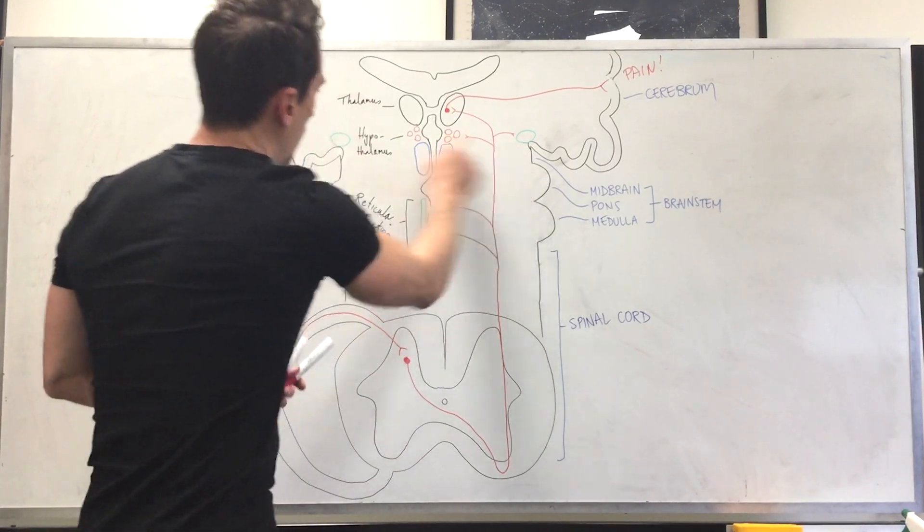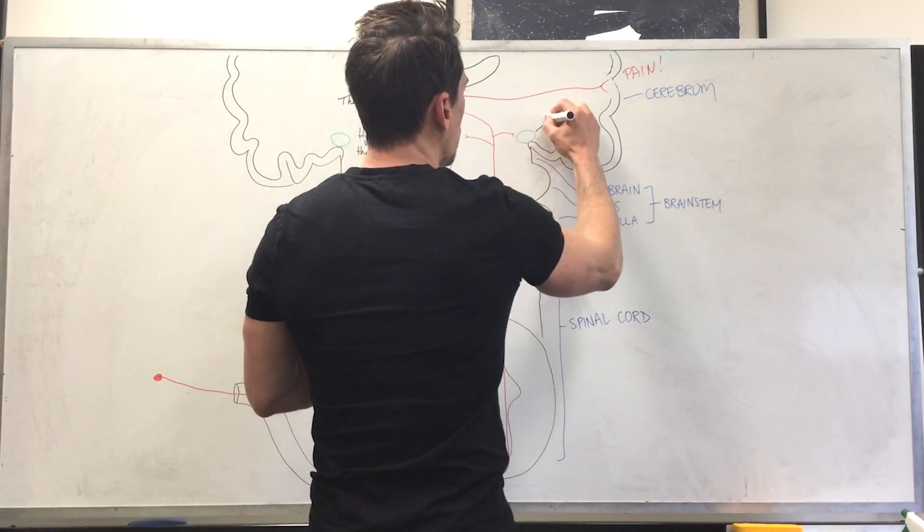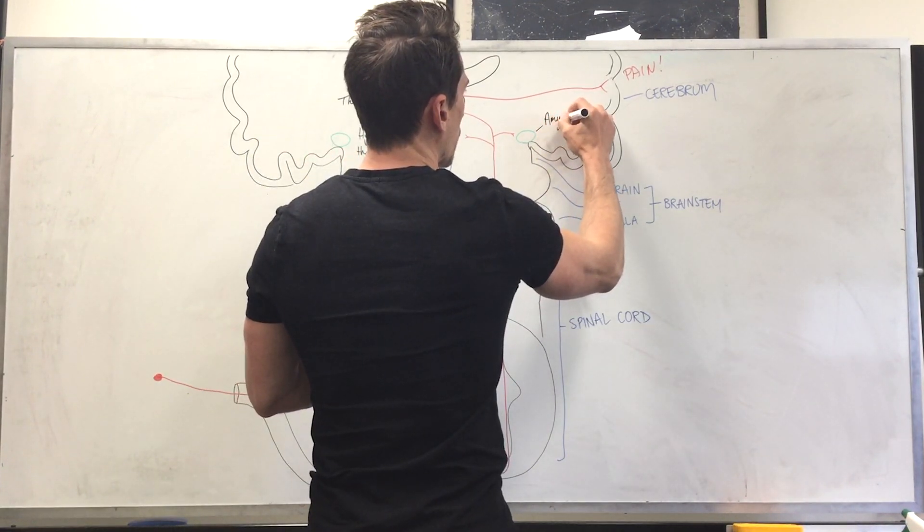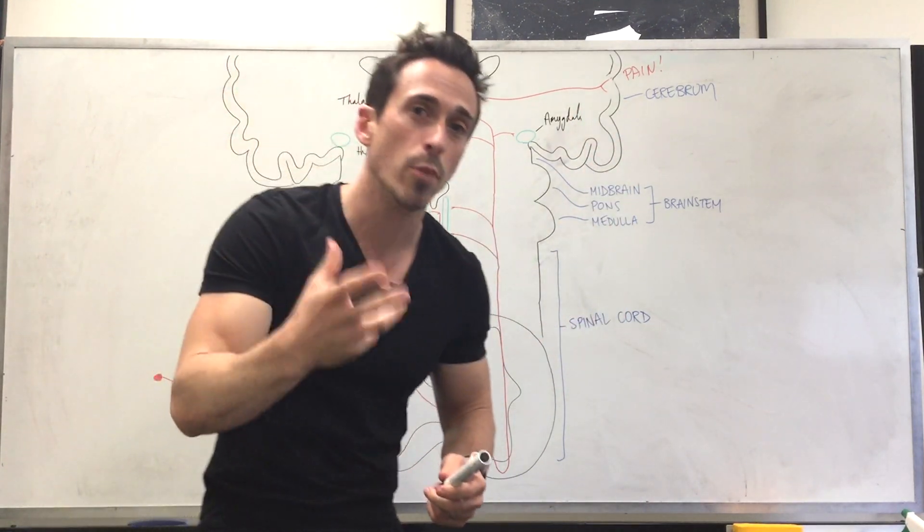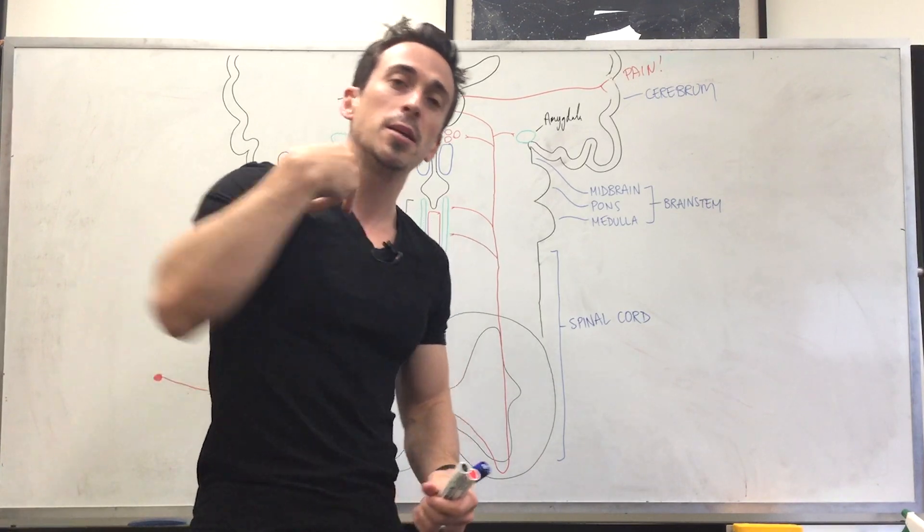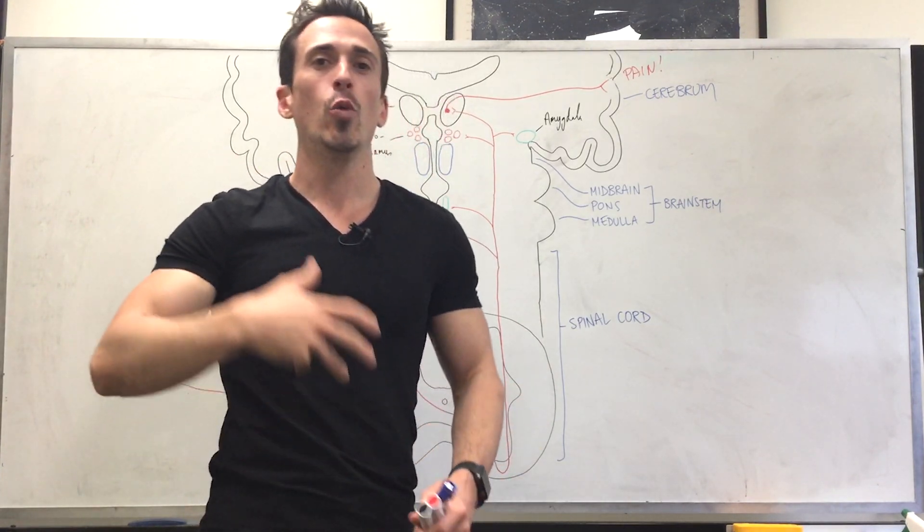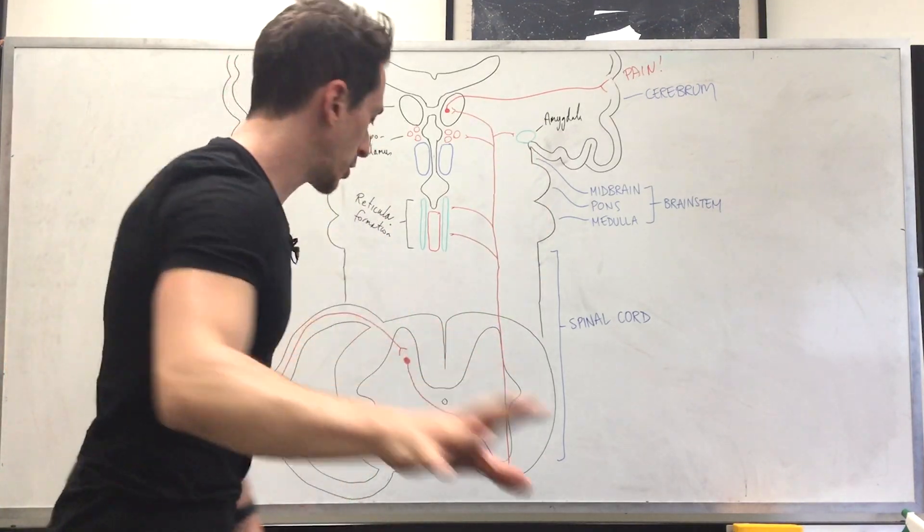All right. This little area here and here, this is part of the limbic system. This is called the amygdala and the amygdala is important in regards to emotional response. Why do we want to have an emotional response to pain? Because it's emotion that will drive our behaviour, which is going to hopefully allow for us to avoid this experience again. So let's just quickly recap.